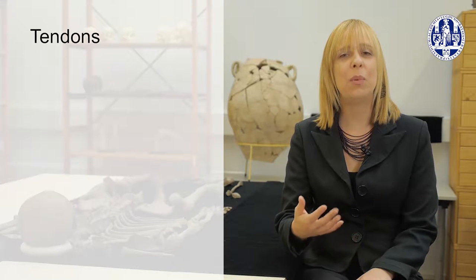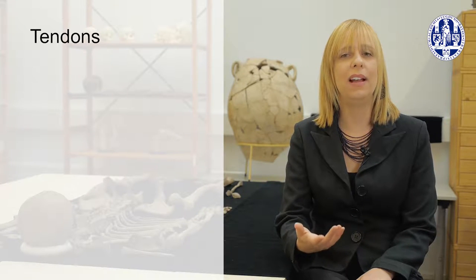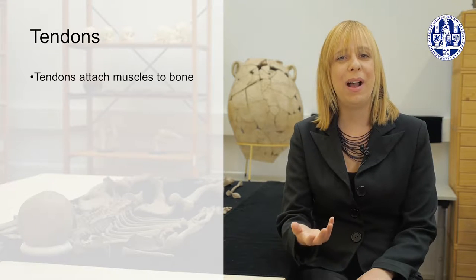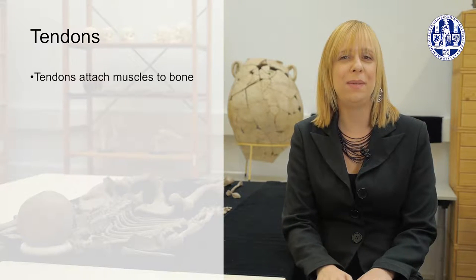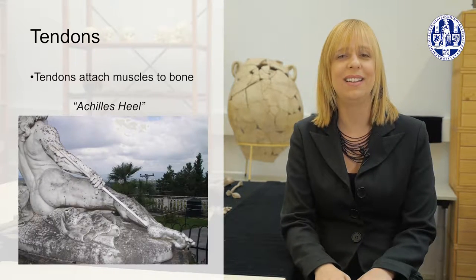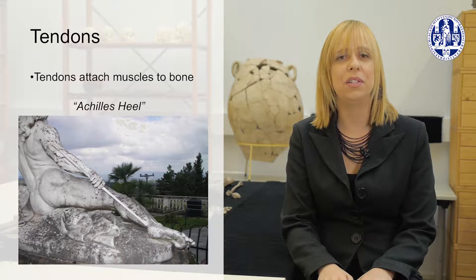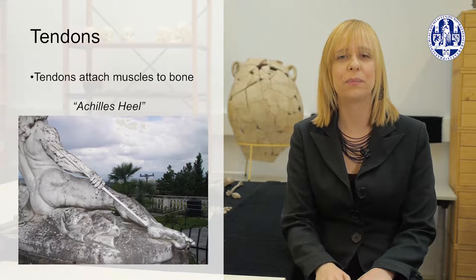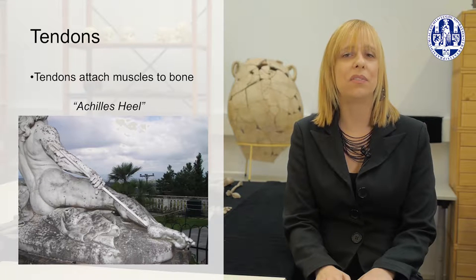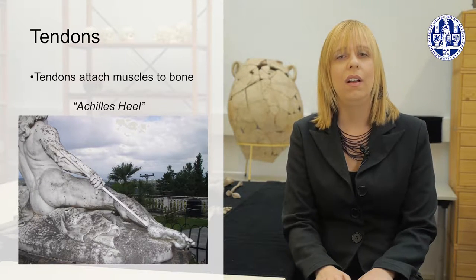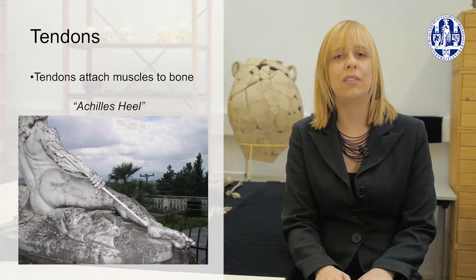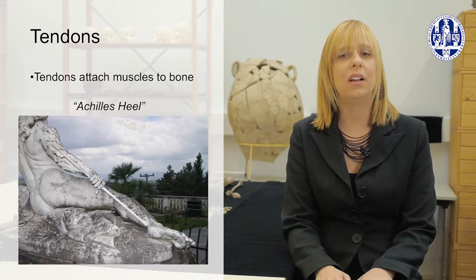Especially important for osteoarchaeologists is how muscles are attached to bones, and that's via tendons. Perhaps the most famous one is the Achilles tendon — a tendon on the back of the leg and the thickest in the human body. It attaches your calf muscles to your calcaneus, or heel bone. 'Achilles heel' refers to someone's vulnerability or downfall, relating to the mythical story of Achilles who was slain during the Trojan War by a poisoned arrow to his heel.